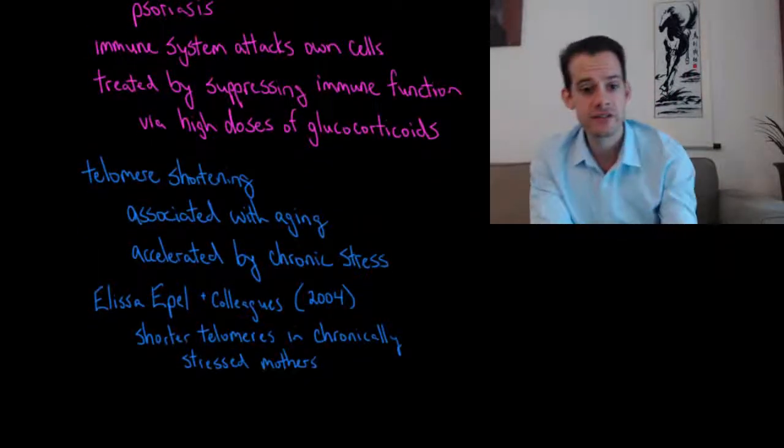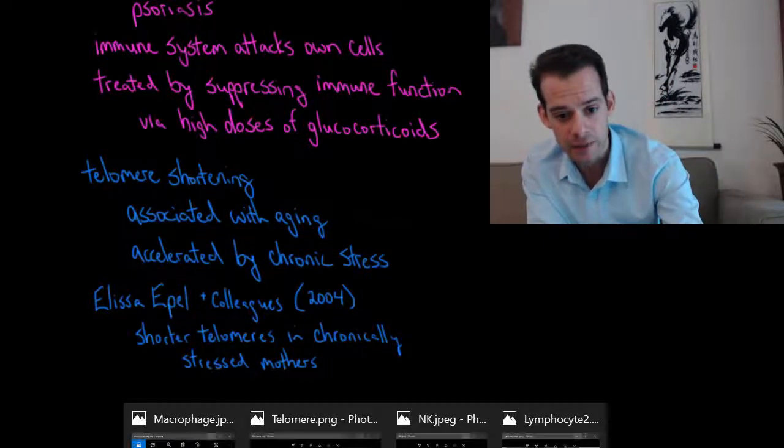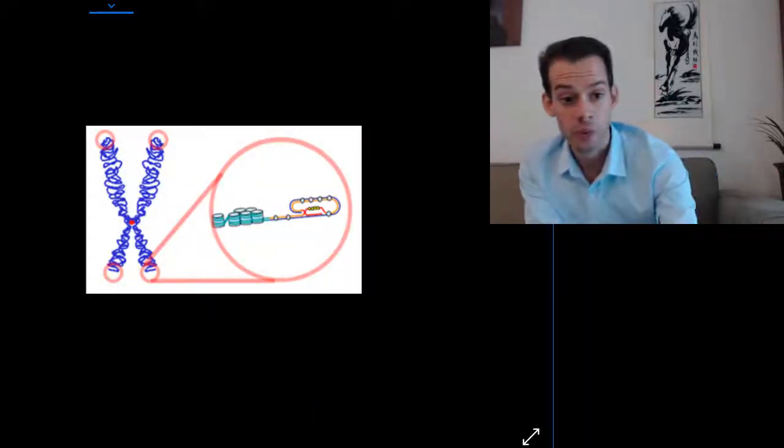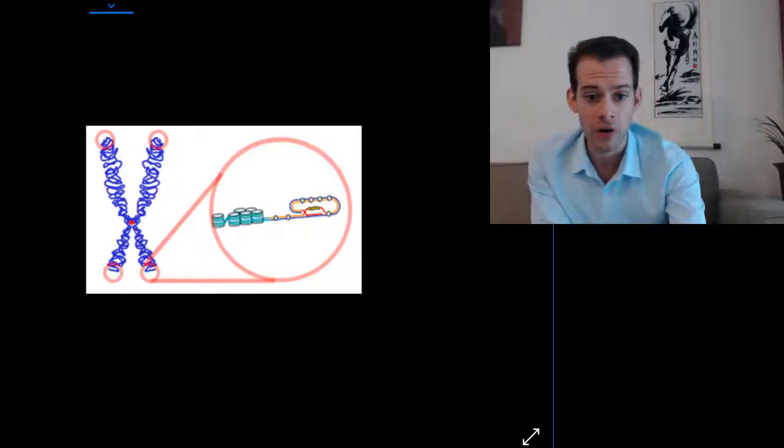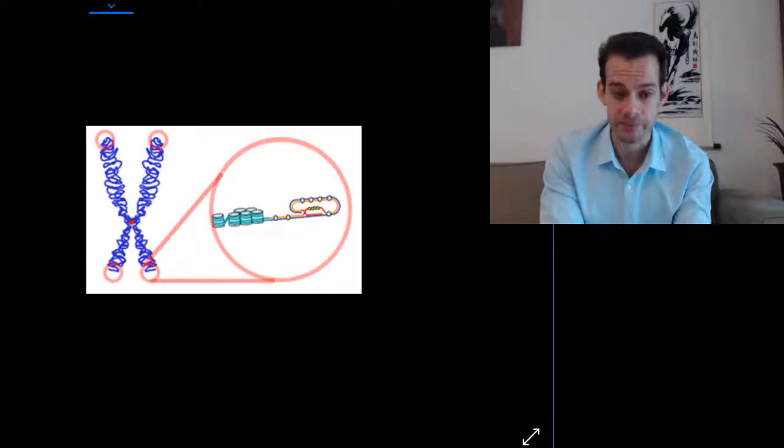And finally, we can see stress influences the telomeres on the ends of chromosomes. So here's a picture of a telomere, or a representation of telomeres on a chromosome. So this is a chromosome here. And at the ends of chromosomes, we have these things called telomeres. And these are sequences of nucleotides. And these are involved in the process of cell division. And over time, the telomeres shorten with aging. And so each time the cell is dividing, this is gradually reducing the size of the telomere until eventually the telomeres become too short to function and the cell can no longer divide. And this is called senescence.